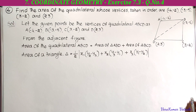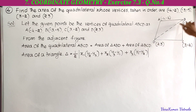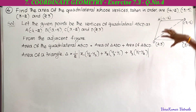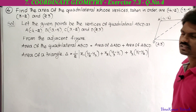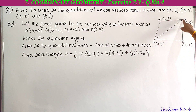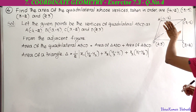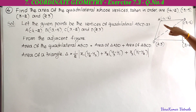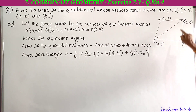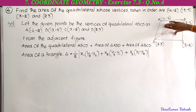By joining vertices B and D, the quadrilateral ABCD is divided into two triangles: triangle ABD and triangle BCD. To find the area of quadrilateral ABCD, we need to find the area of triangle ABD and the area of triangle BCD, then add these two areas together.